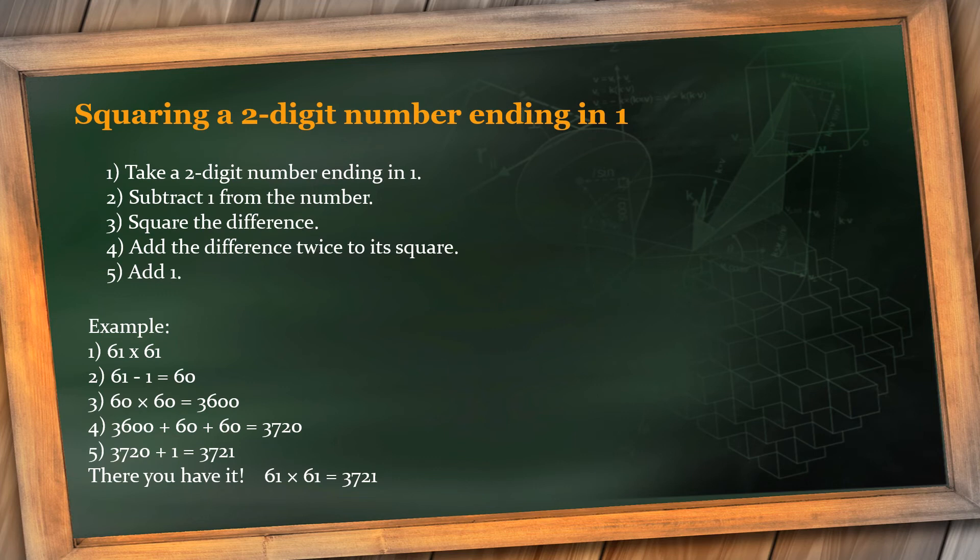So 61 squared, that is 61 multiplied by 61. What I'll do is I'll subtract 1 from the number, so 61 minus 1 equals 60, and square 60. When I square it, I know the answer: 6 into 6 is 36 and two zeros, which makes it 3600. Now after squaring, I have to add 3600 by the difference twice to its square, that is 60 plus 60. 3600 plus 60 plus 60 gives me 3720. Then add 1 to it, that is 3721, for which we have received the square of 61, that is 3721. So easy, isn't it?